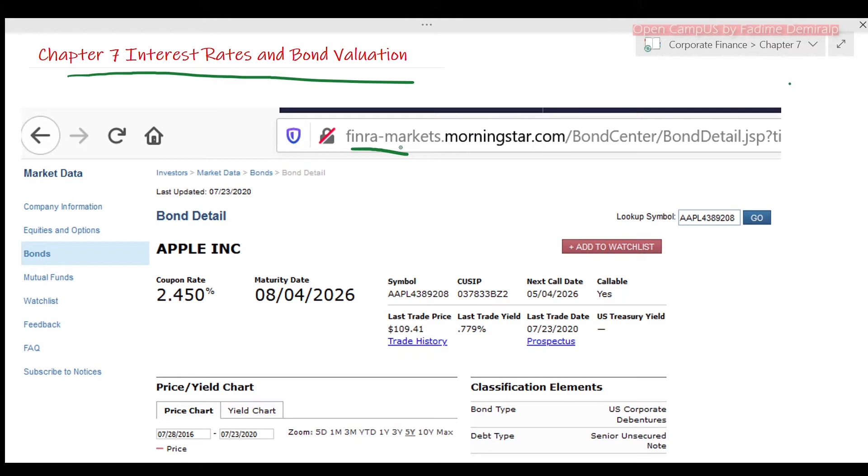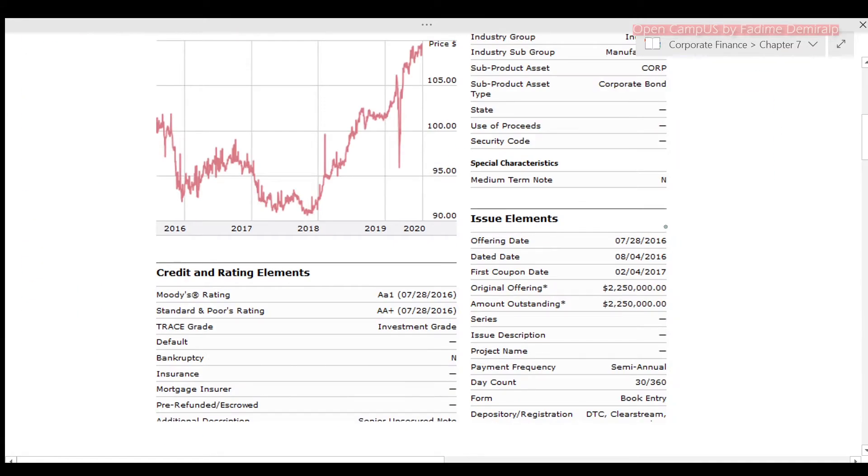I would like to continue with Apple in this chapter. Remember, I picked Apple since we are in New York and New York is known as Big Apple, not the advertised company. If you go down, you will see that this bond was issued in 2016.